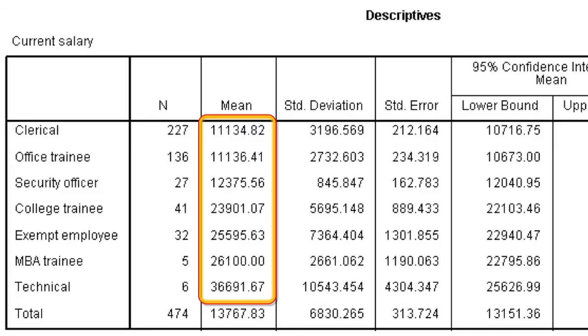So the mean salary for the clerical workers, this was some years ago, $11,000. Office trainees, around about the same, about $11,000. Security officers got paid a little bit more, average about $12,000. College trainees got a lot more, average of $23,900, and so on. So you can see there are differences. There are some groups clearly getting different average salaries from other groups.